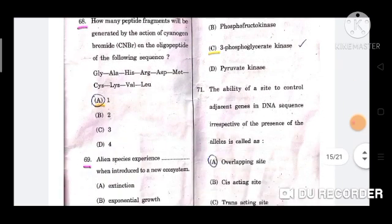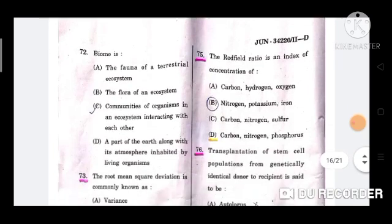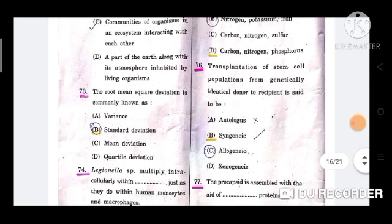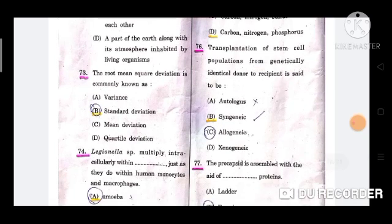Question number 72: Biome is? Option is C, communities of organism in an ecosystem interacting with each other. Next question, it is 73: The root mean square deviation is commonly known as? The option is B, standard deviation.